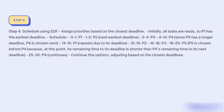Step 4: Schedule using EDF. Assign priorities based on the closest deadline. Initially, all tasks are ready, so P1 has the earliest deadline. Schedule: 0–1: P1. 1–2: P2 (next earliest deadline). 2–4: P3. 4–14: P4, since P5 has a longer deadline.